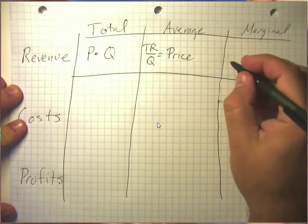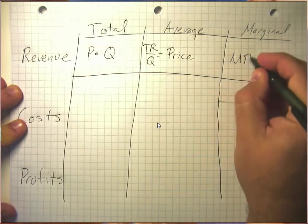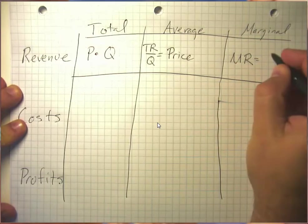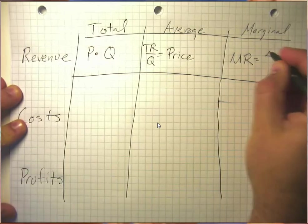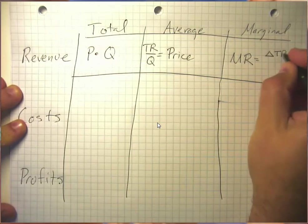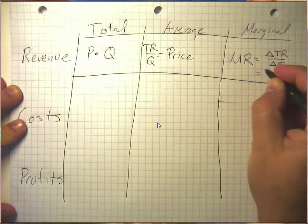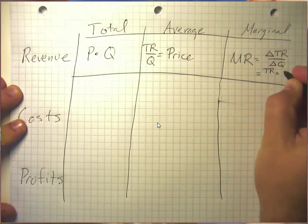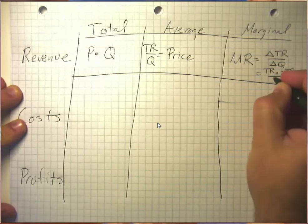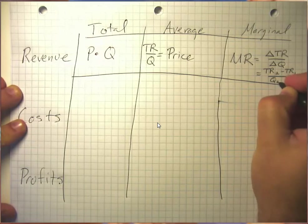Marginal revenue, which we often abbreviate MR, is the change in total revenue over the change in the quantity sold. Or if you want to break it down a little bit more, then we would have TR2 minus TR1 over Q2 minus Q1.